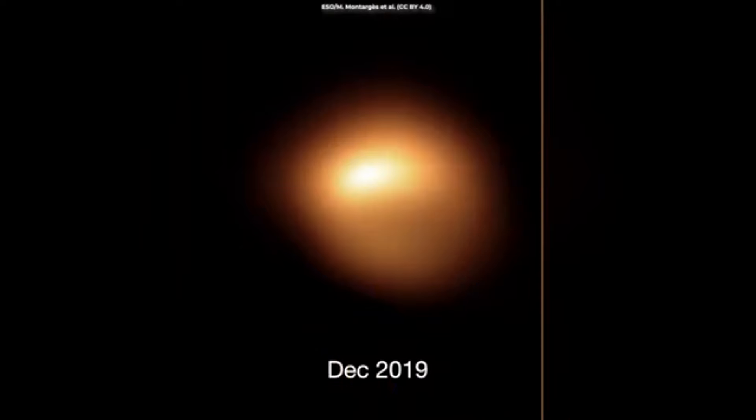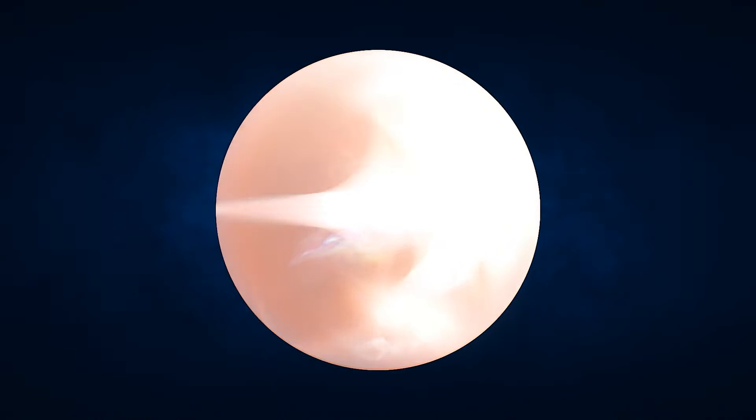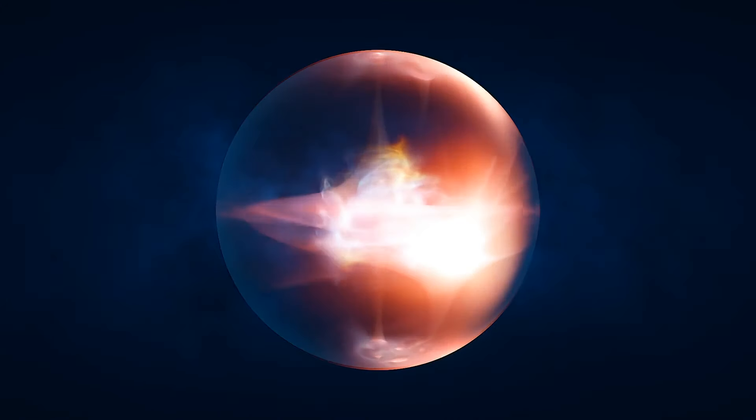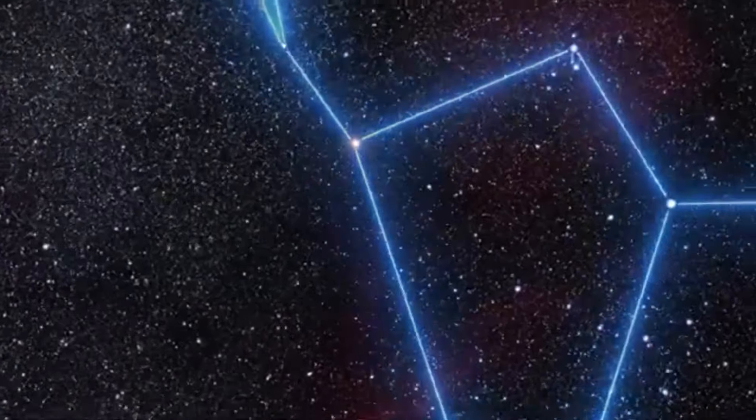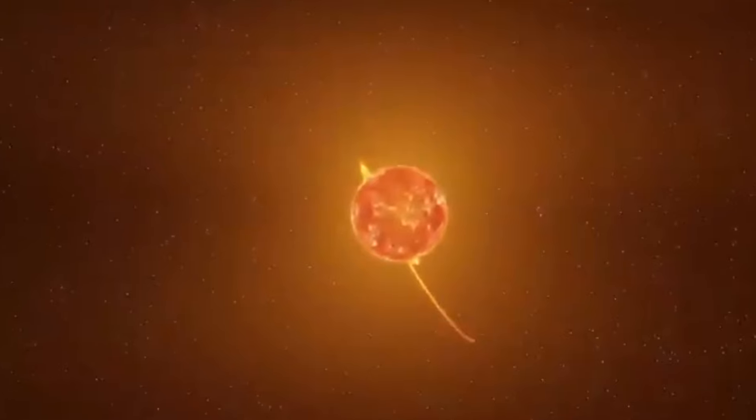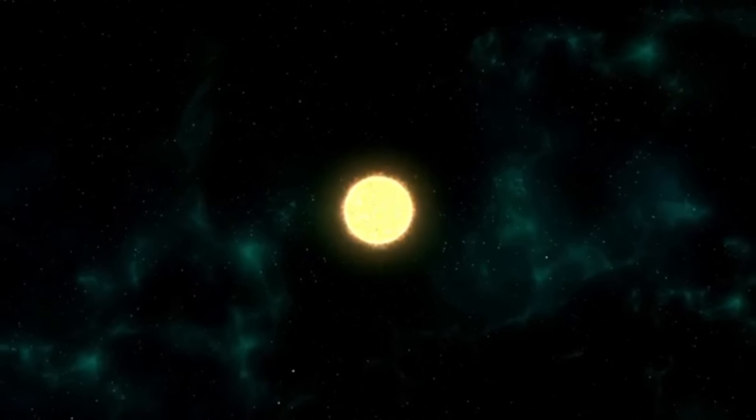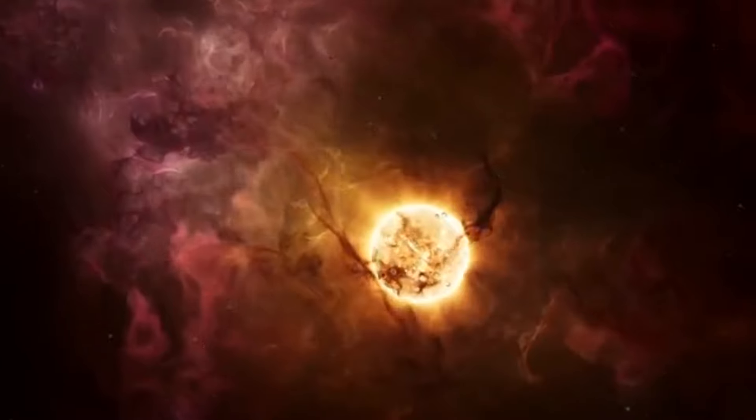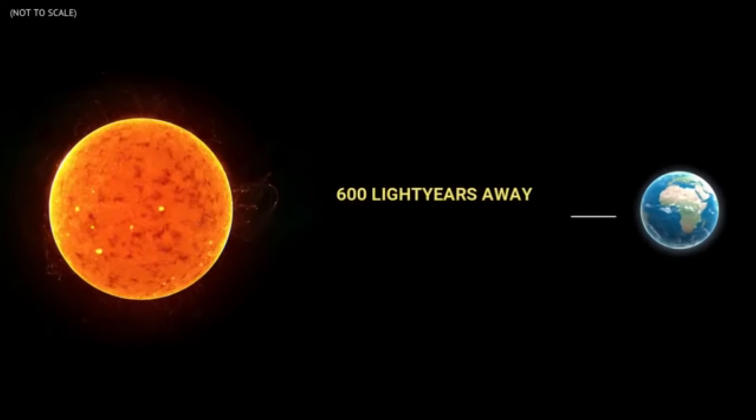In this intriguing scenario, the unusual six-year fluctuations in Betelgeuse's brightness are hypothesized to correlate directly with the orbit of a companion star. This companion star's position relative to Betelgeuse has a significant impact on the observed luminosity of the red supergiant. When the companion star is located behind Betelgeuse from our perspective on Earth, the light we receive from Betelgeuse dims to its lowest point. This dip in brightness occurs because the companion star is obscured, preventing its light from contributing to the overall luminosity that we observe. Conversely, when the companion star is positioned adjacent to Betelgeuse, the combined brightness of the two stars results in a peak luminosity. This interaction is fascinating because it highlights how celestial bodies in close proximity can significantly influence each other's apparent brightness.